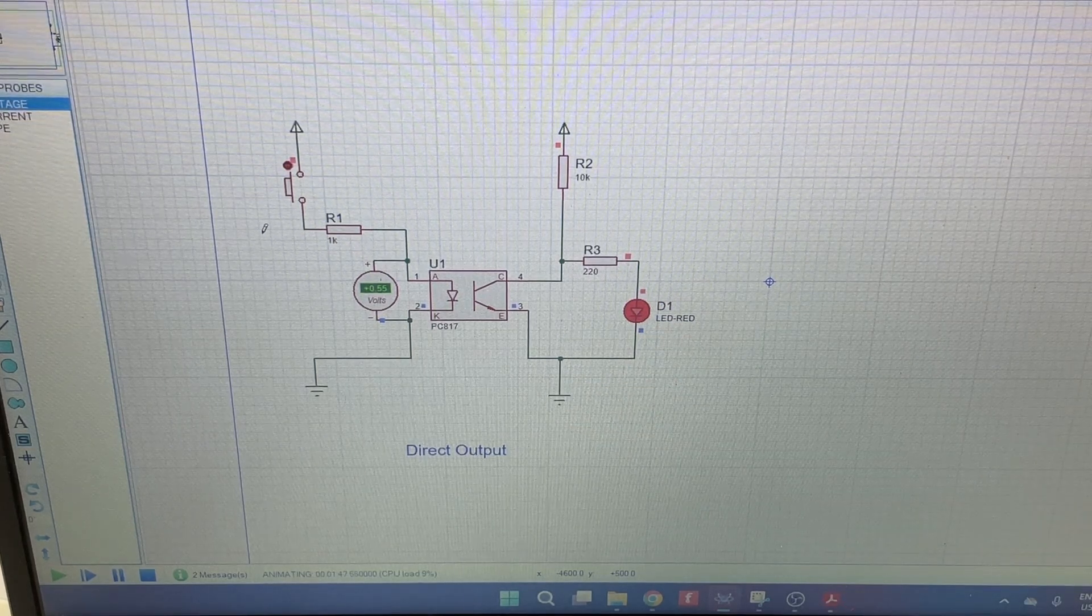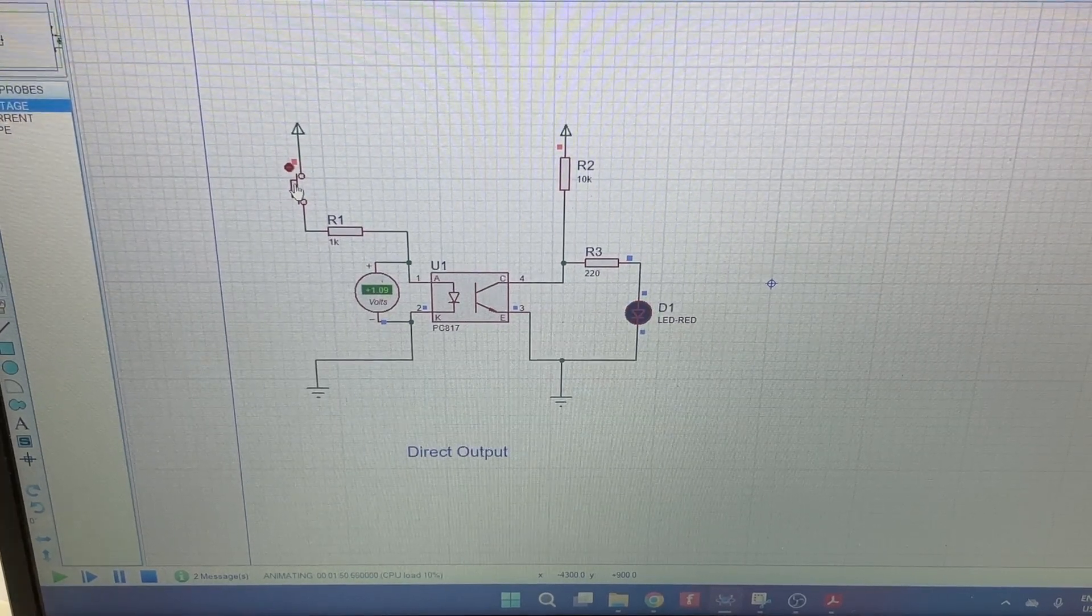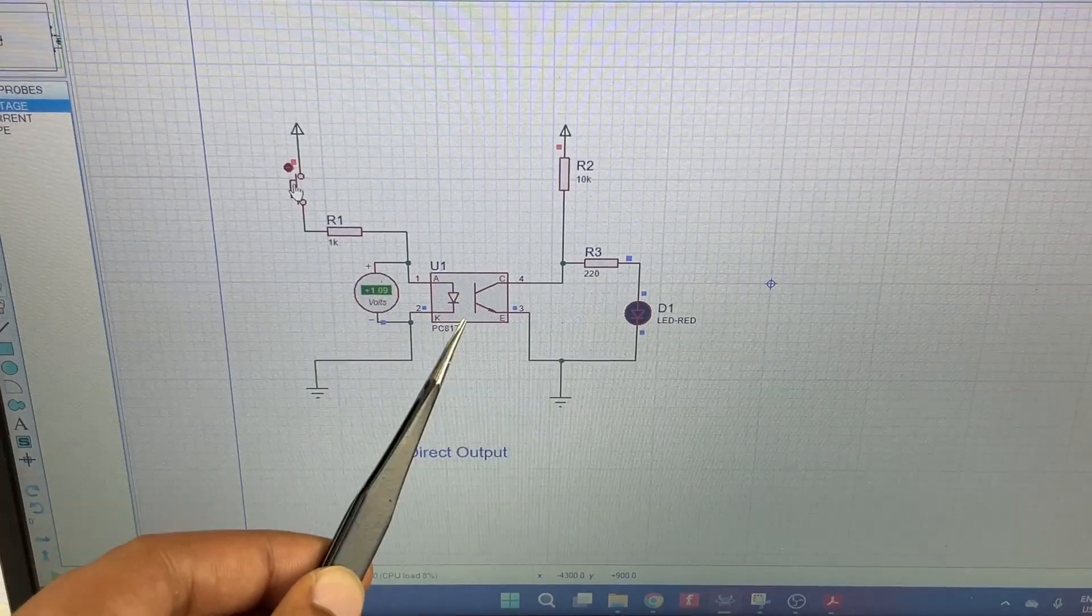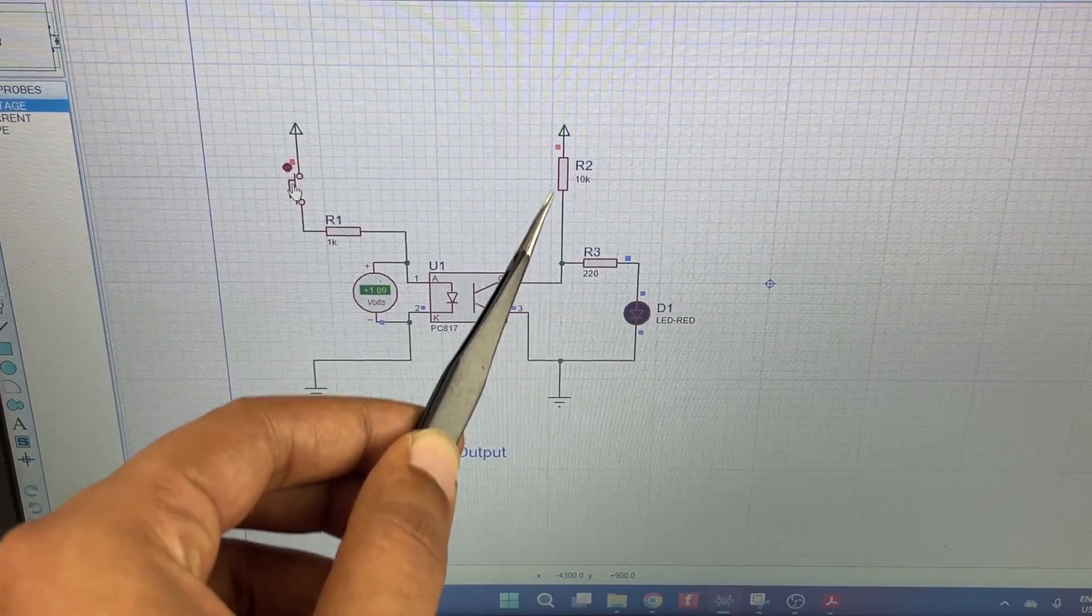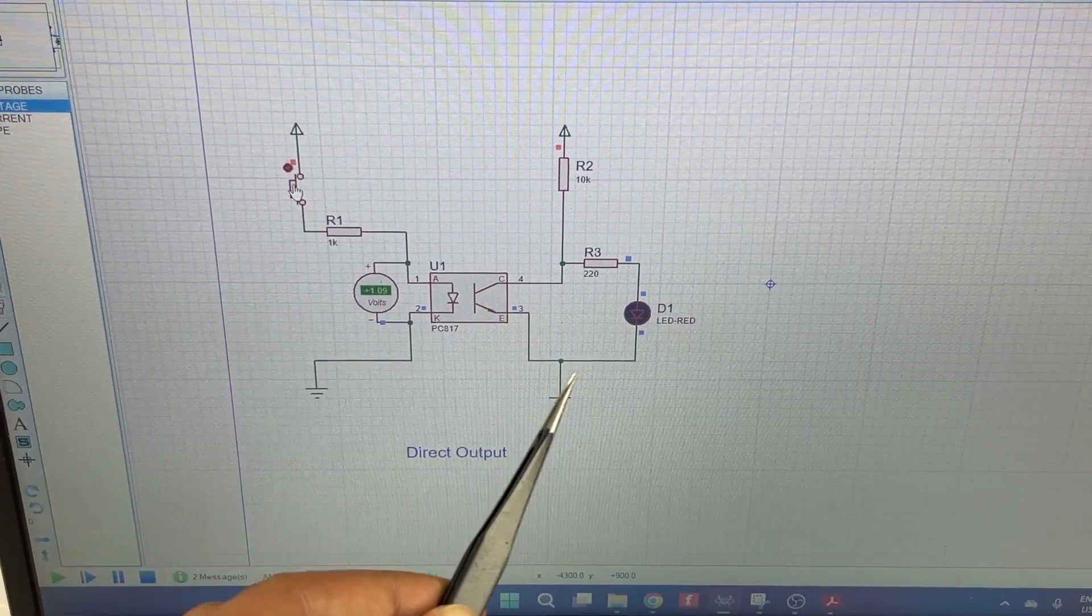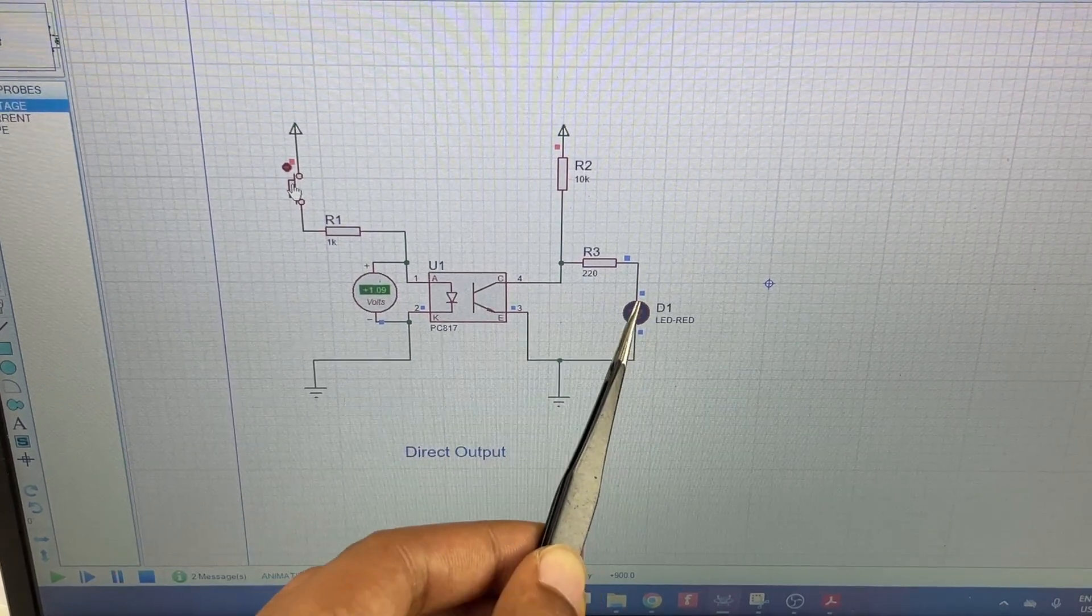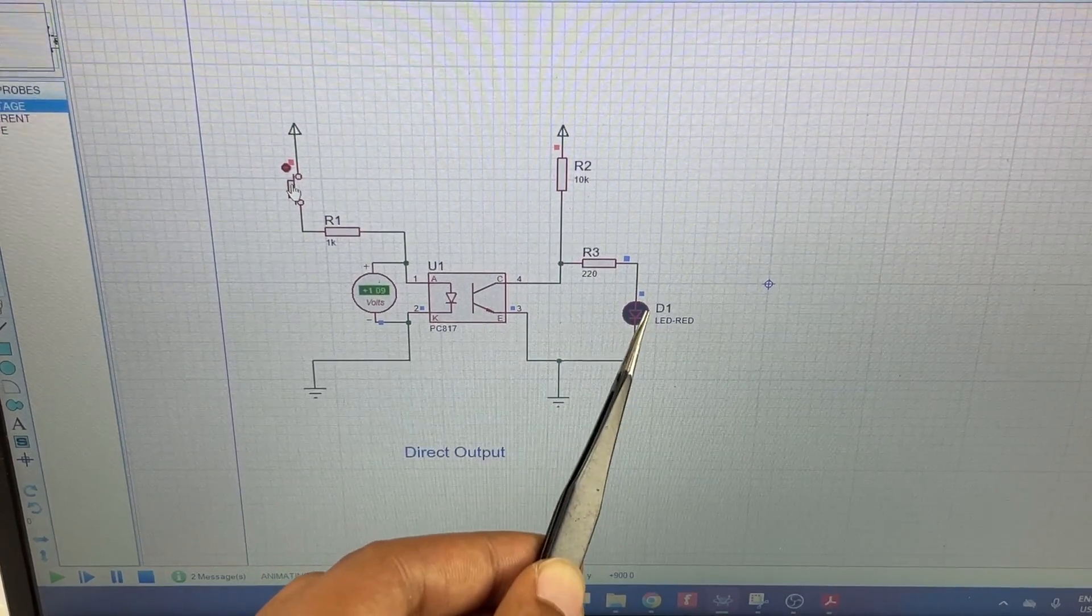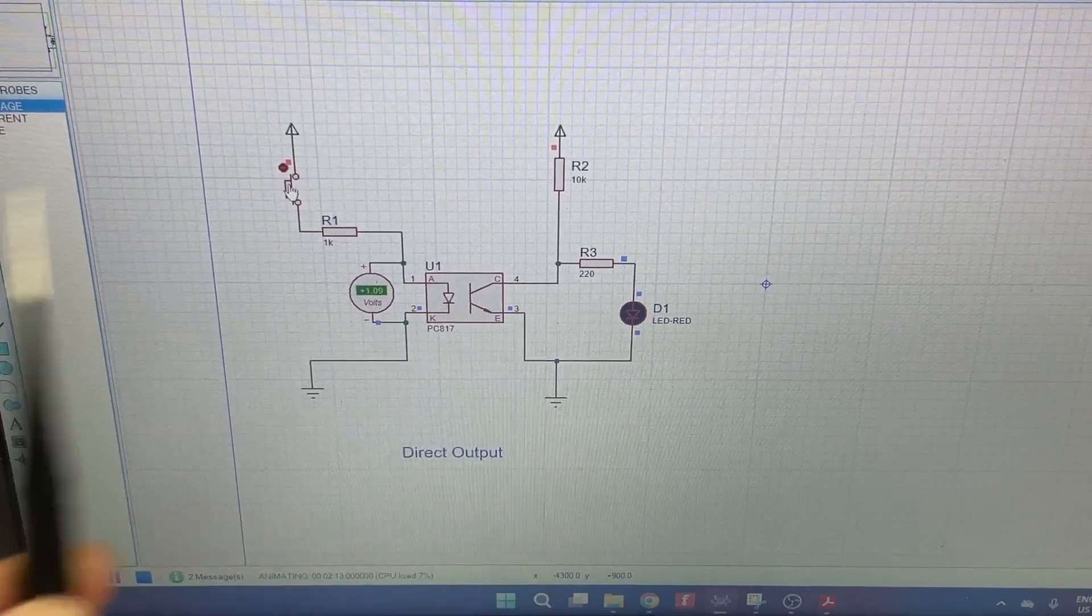But if I go ahead and turn on this switch you can see that there is voltage across this LED and hence this transistor will get closed. The complete power will now flow through this transistor because it is the least resistance path and no current flows here and hence the LED is off. This is how you can use an optocoupler to isolate two circuits.